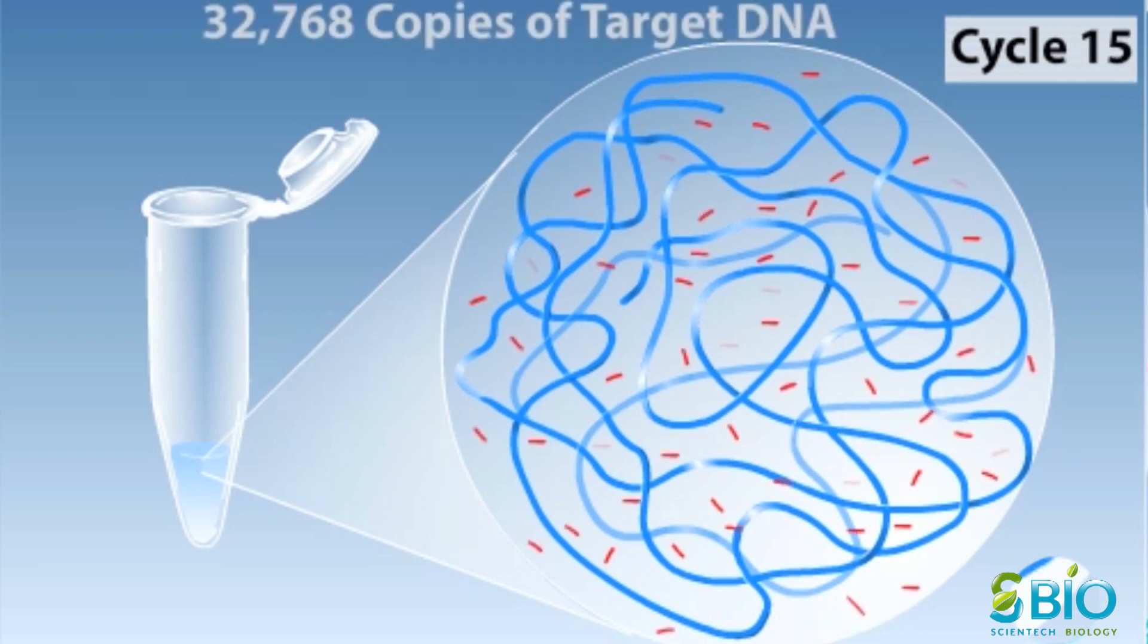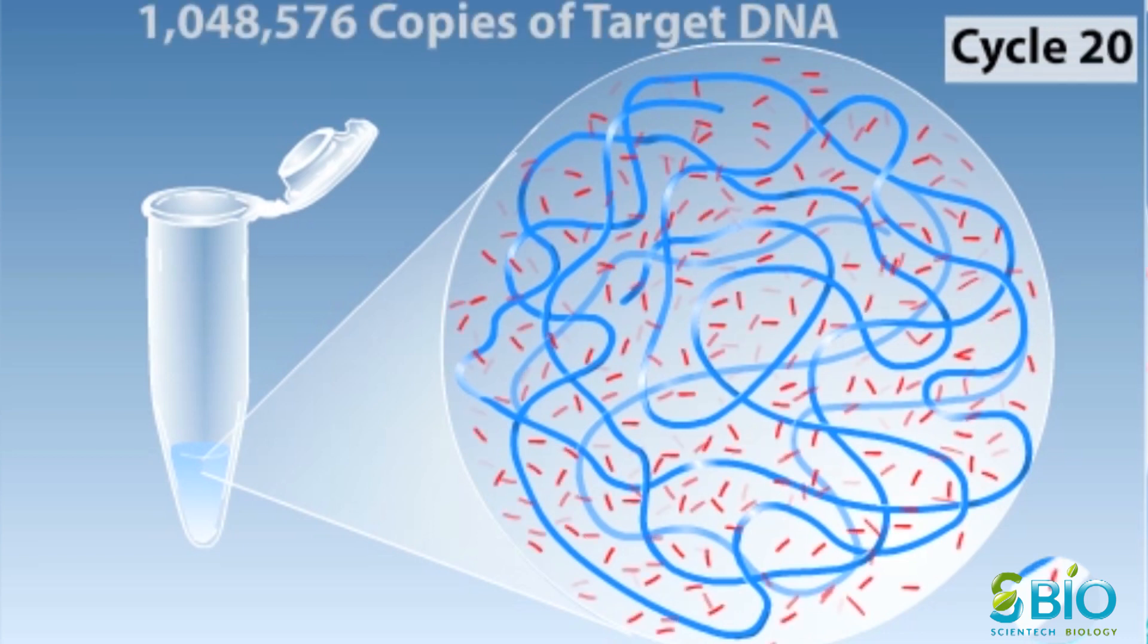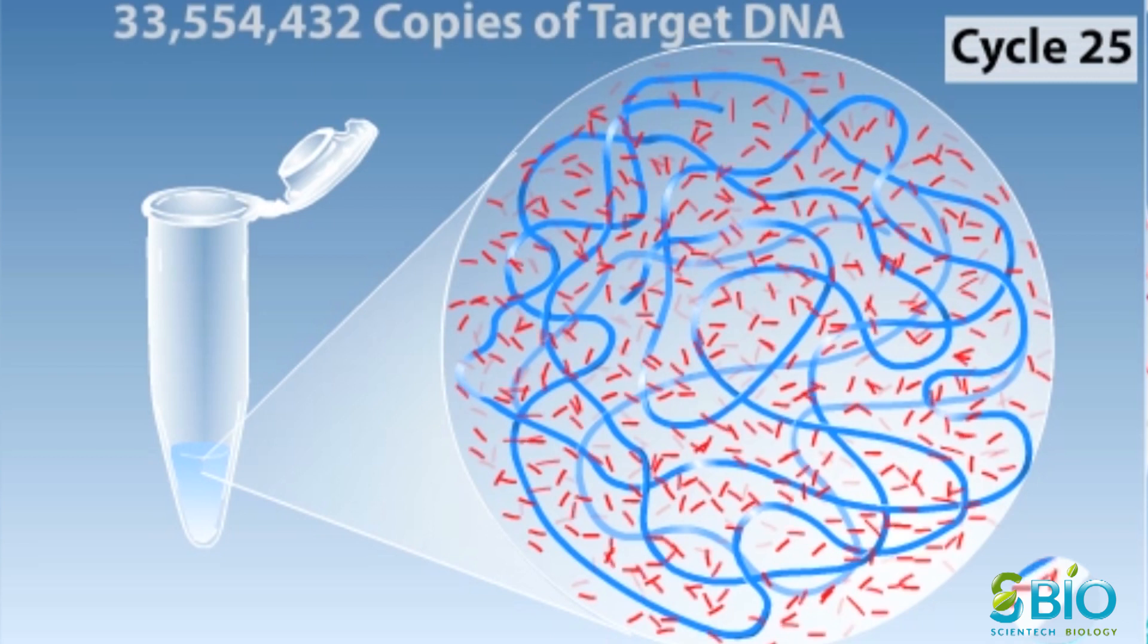With each additional cycle, the number of copies of our target sequence doubles. At the end of cycle 25, there are more than 33 million copies of this double-stranded target region.